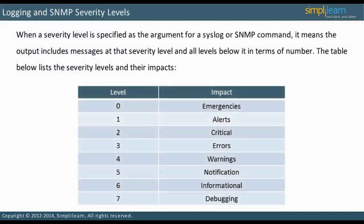Specifying a severity level as the argument for a syslog or SNMP command means the output includes messages at that severity level and all levels below it in terms of number. As seen in the table on the slide, there are eight severity levels. The lower the number, the higher the impact on the system. For a Cisco device, the default severity level is six, known as informational.